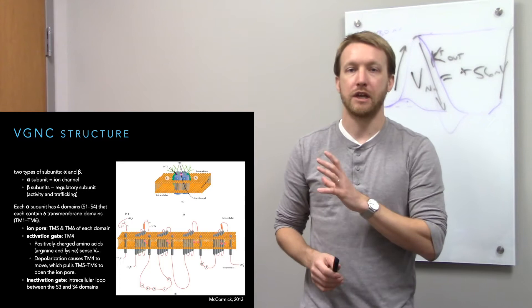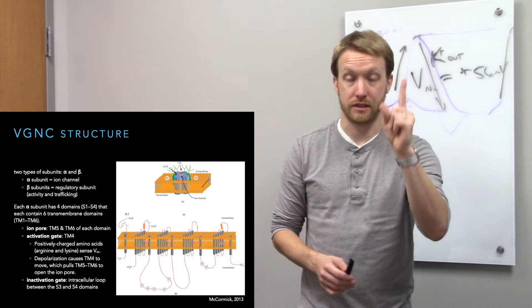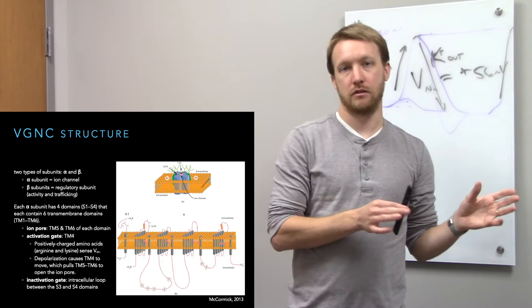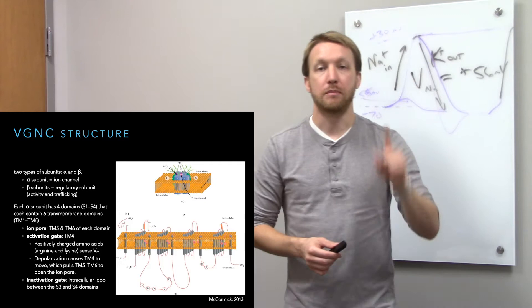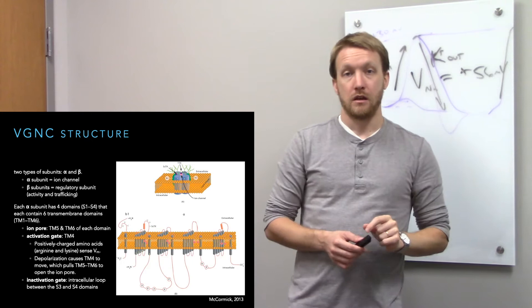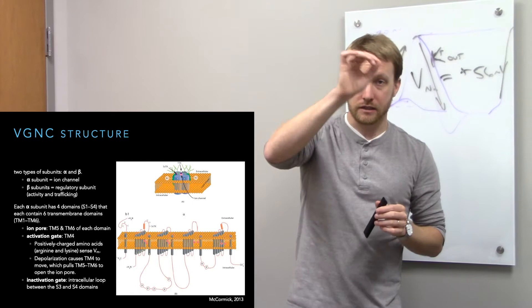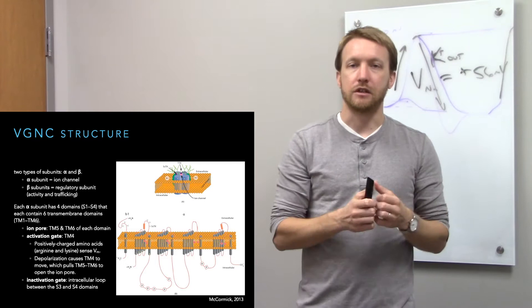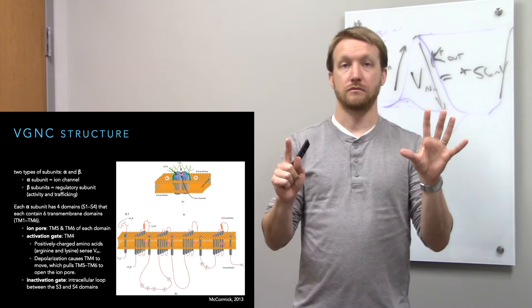The action potential is all about voltage-gated sodium and potassium channels. Their structure is very similar but with one critical difference. Voltage-gated sodium channels are made from a single polypeptide — the alpha subunit is the functional ion channel; beta subunits handle trafficking and can be ignored. Voltage-gated potassium channels, by contrast, are made of four separate polypeptides. In both cases, there are four domains, each with six transmembrane domains.